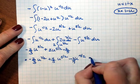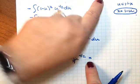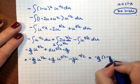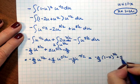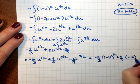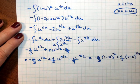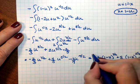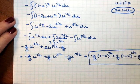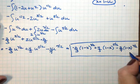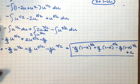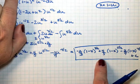Now remember, I want to replace my u with 1 minus x. So I have negative 2 thirds times 1 minus x raised to the 3 halves, plus 4 fifths times 1 minus x raised to the 5 halves, minus 2 sevenths times 1 minus x raised to the 7 halves. And there's your final answer — don't forget your C because it's an indefinite integral. That is example 1D from your 6869 notes.